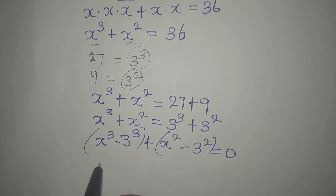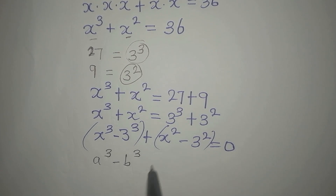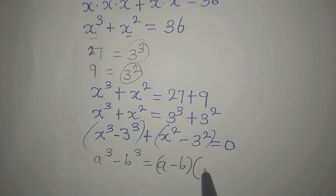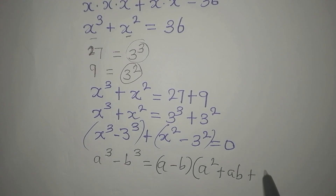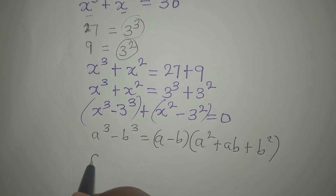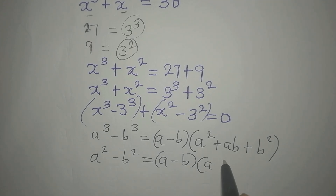Now let's look at these identities. If you have a to the power of 3 minus b to the power of 3, this means you're having a minus b, times a squared plus ab plus b squared. And if it is a difference of two squares like a squared minus b squared, this will be equal to a minus b into a plus b.